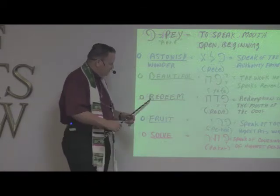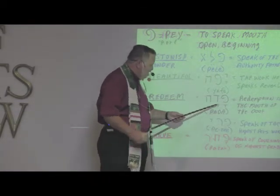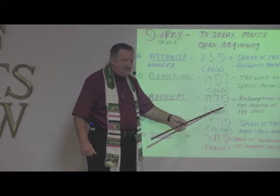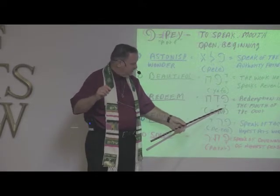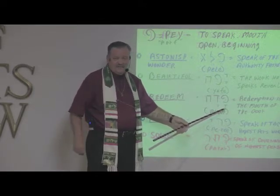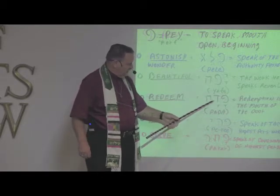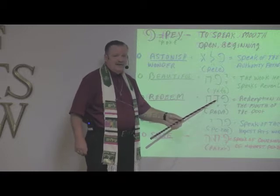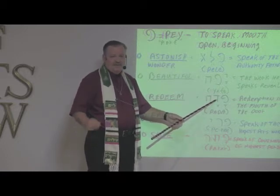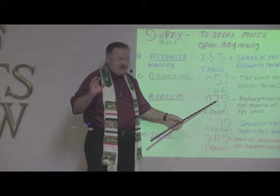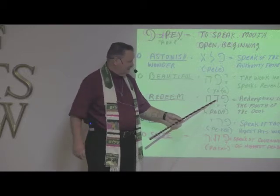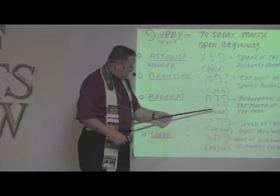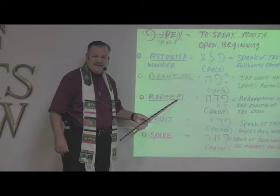And then 'redeem' — to redeem something. Again we have Peh, which means to speak. There's a small letter underneath the Peh that looks like a small T — that's a vowel, the A. And then we have Dalet, which is the door. Remember, where's the blood applied? It's applied on the door — so it's the place of covenant. And then Hey again — to declare or to reveal. These letters all have something to do with understanding what it means to redeem something.